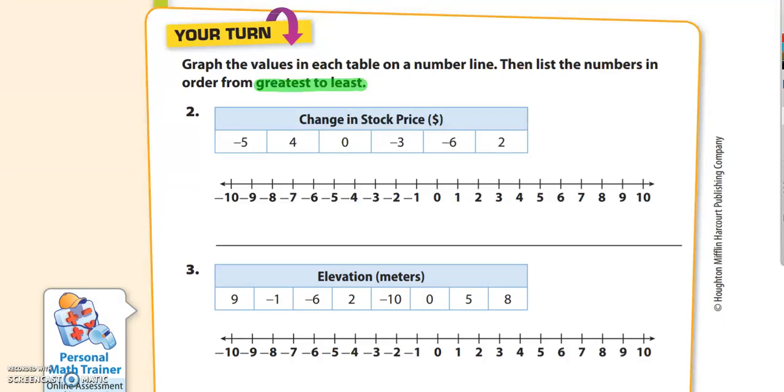Number two, the first thing you're supposed to do is graph them. So negative 5 would go here, and positive 4, and 0, and negative 3, and negative 6, and positive 2. And the greatest number is going to be farthest to the right, so this is going to be the greatest. And we're supposed to go to least, and that's going to be over here on the left. So I'm just going to read this number line backwards: 4, 2, 0, negative 3, negative 5, and negative 6.